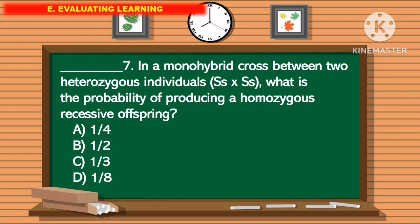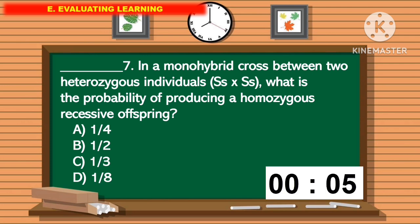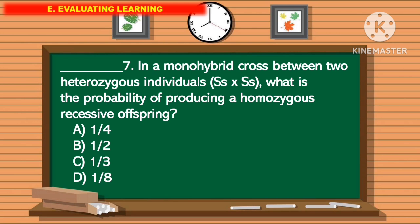For question number 7, in a monohybrid cross between two heterozygous individuals, what is the probability of producing a homozygous recessive offspring? The correct answer is letter A.